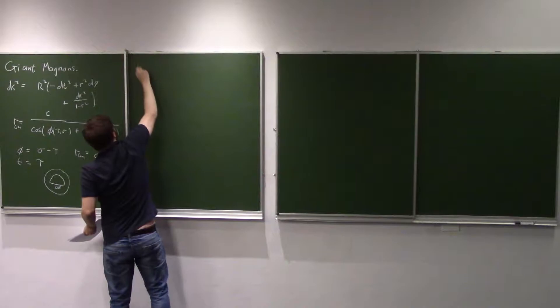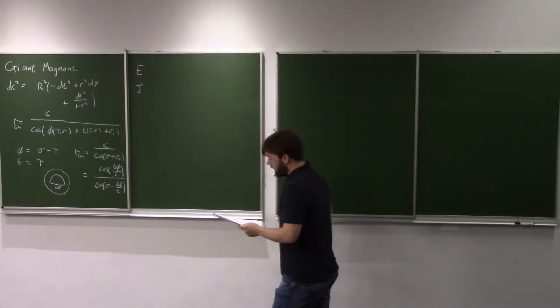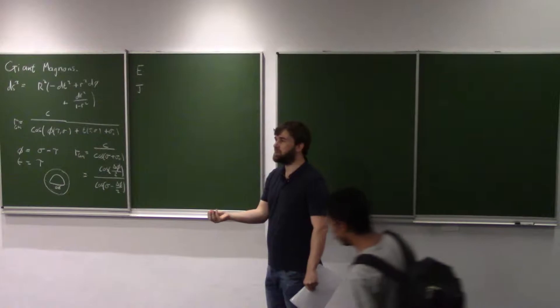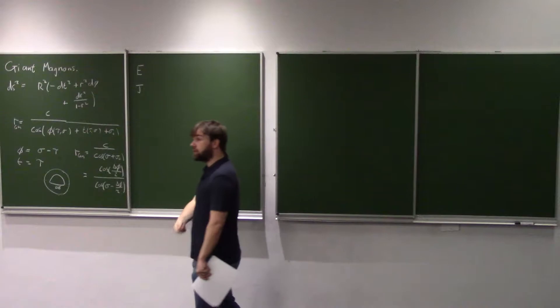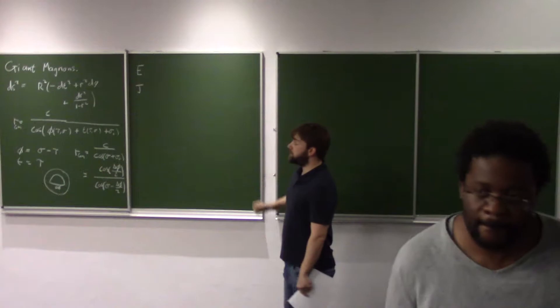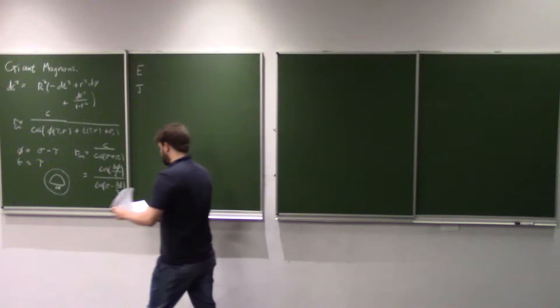What we're going to do today is first compute the energy of the solution and the angular momentum. To do this, I need to compute the conserved charge and current associated with time translations and angular translations. I know many of you have seen this in classical mechanics, but I want to briefly explain what it looks like in field theory.